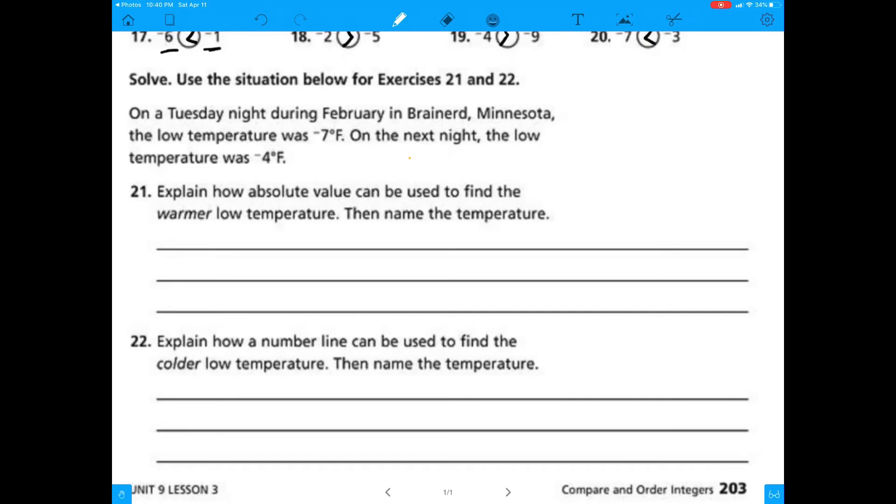This is showing us, hey, which number is greater? So for number 17, it was looking at negative 6 actually has a greater absolute value, so it's actually smaller. That's how that works out.